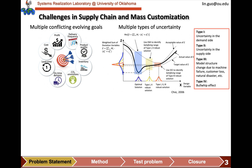Type three is the uncertainty in model structure, including anything that changes dimensionality, mathematical relationships among the variables, and the fidelity of the model — natural disasters, for example. Type four is the bullwhip effect, which is the uncertainty we create while we try to manage the first three types of uncertainty.